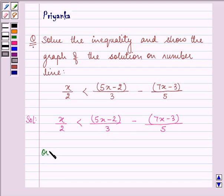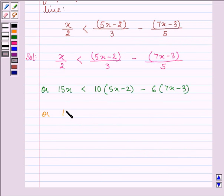So on doing so we have now 15x is less than 10 bracket 5x minus 2 minus 6 bracket 7x minus 3. Now by removing the brackets we have 15x is less than 50x minus 20 minus 42x plus 18.